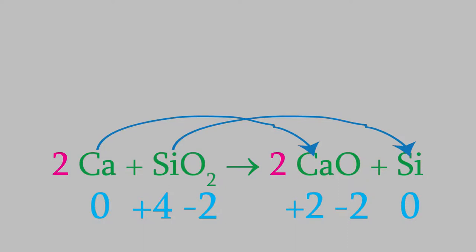So in our example, the charge on the silicon went down. We see that the silicon was reduced. Meanwhile, the charge on the calcium increased. That's called oxidation. And that's why these are called reduction-oxidation or redox reactions.